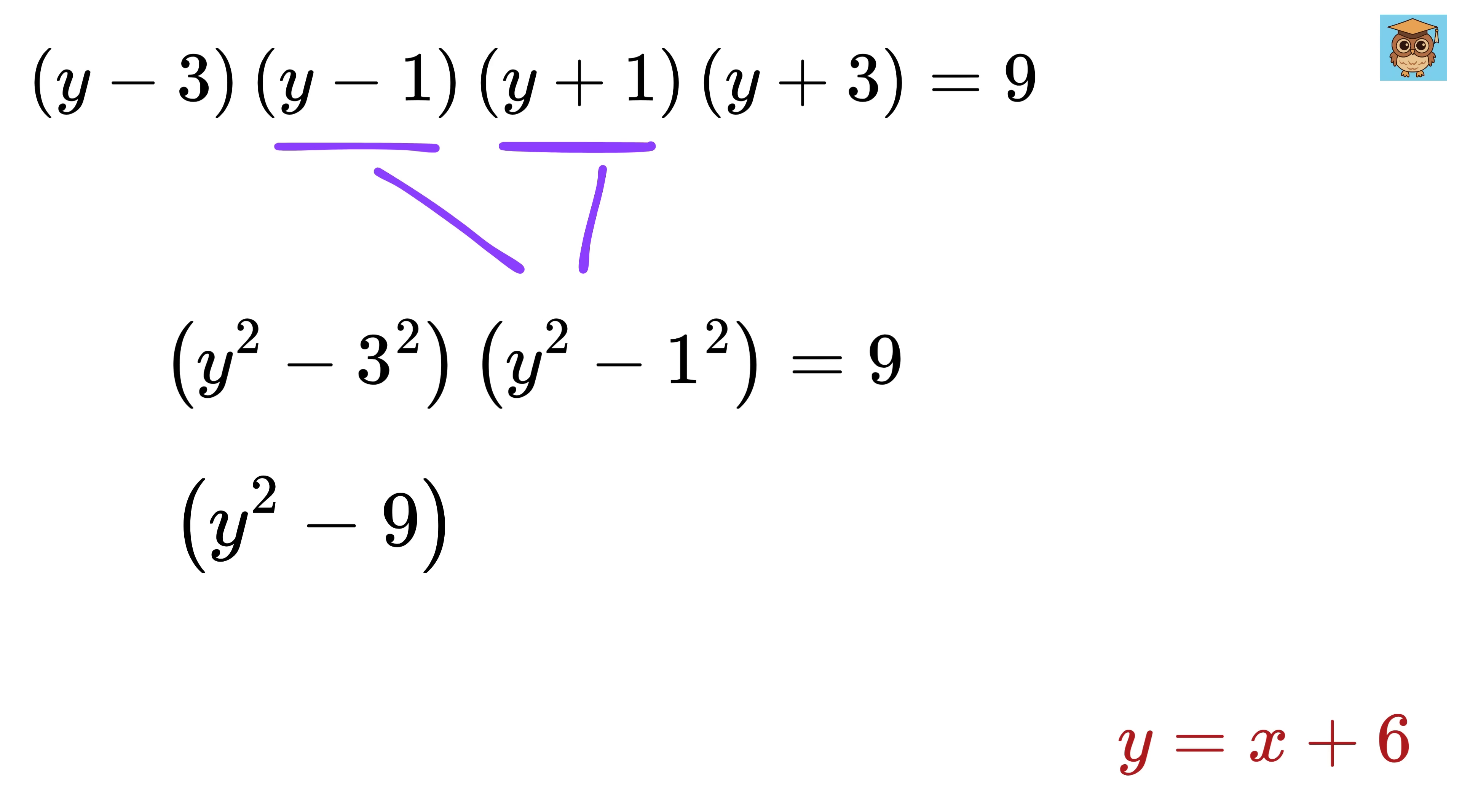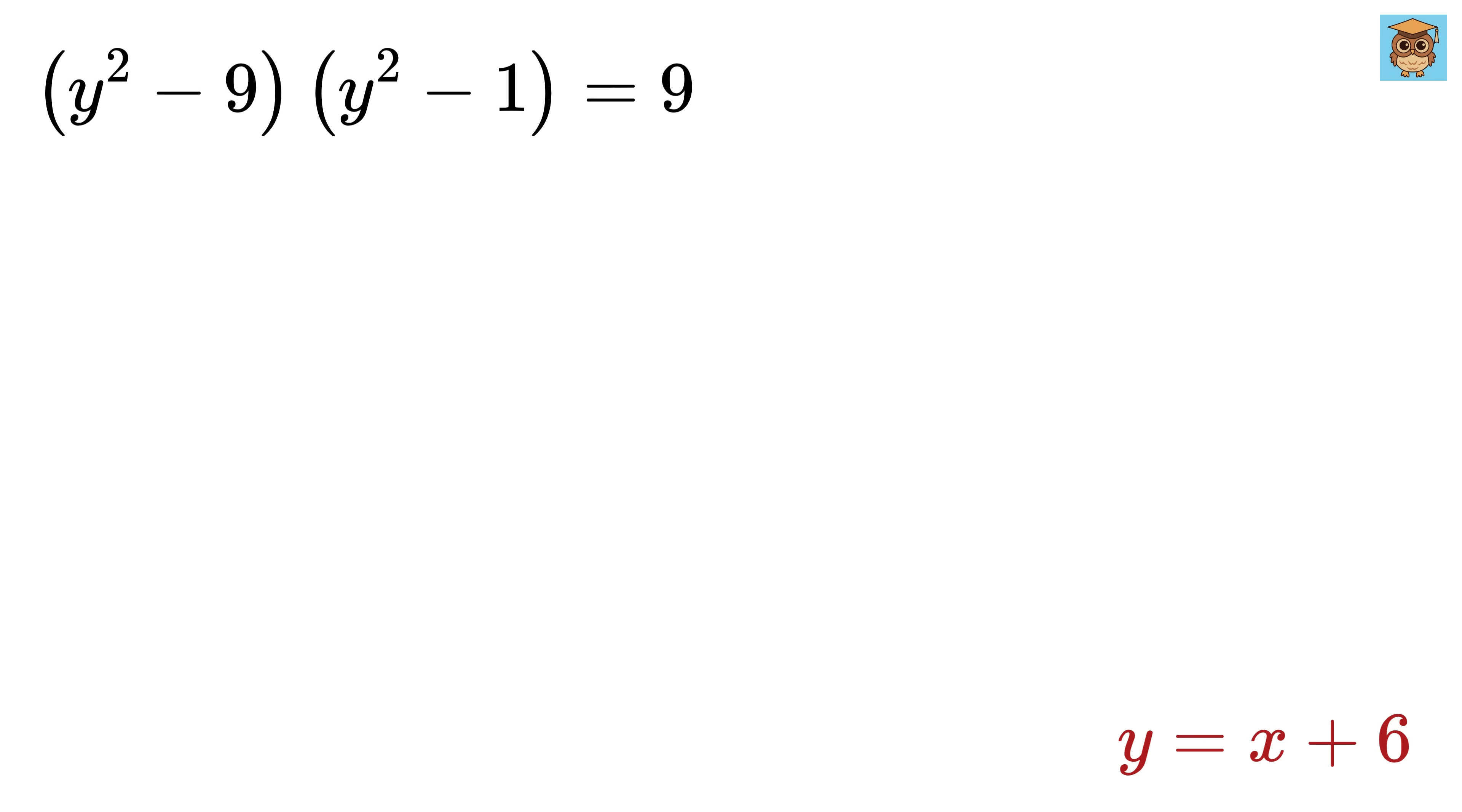So now we have y squared minus 9 times y squared minus 1 equals 9. Now what are you again thinking of expanding this? Hold on, we can again reduce it into a nicer form. What will be the average of 9 and 1? It will be 9 plus 1 over 2, or 10 over 2, which is 5, right?